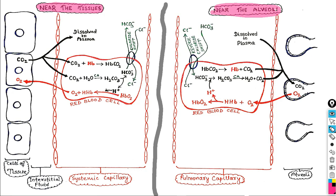We all already know that in our cells oxygen is used in the process of cellular respiration, and in the same process the gas carbon dioxide is produced. This CO2 needs to be brought back to the lungs and we exhale it out. Here you can see inside the cell CO2 is produced and this CO2 diffuses into the blood capillary.